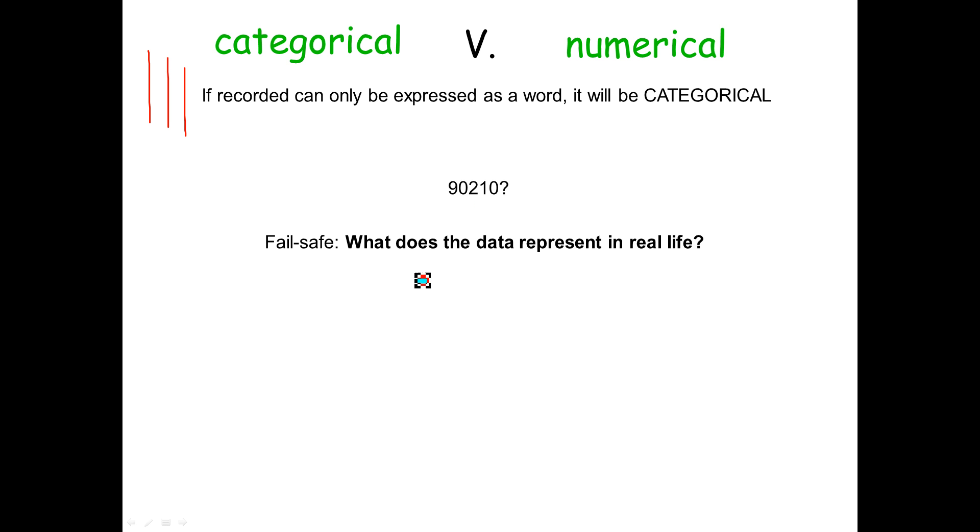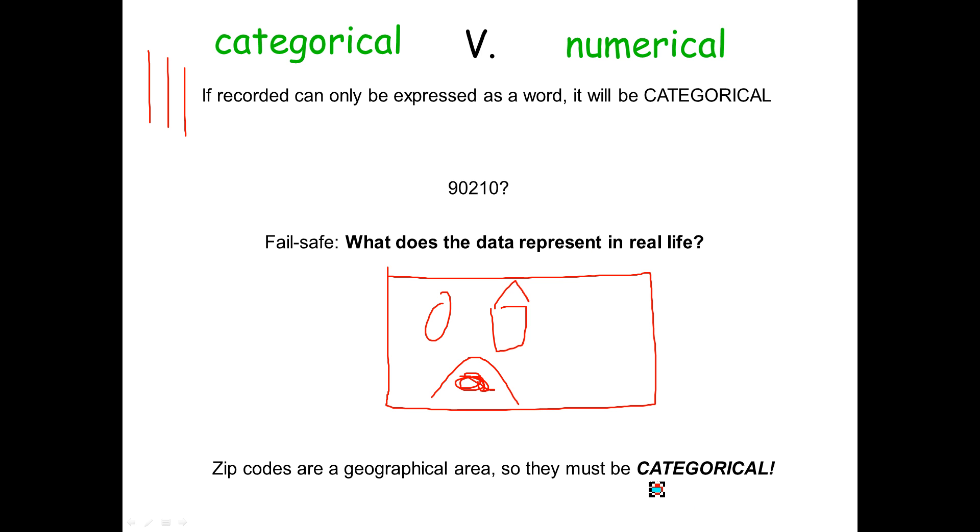In this case, a zip code actually represents a large geographic area. There are homes, there are swimming pools, there's Bin Laden's hideout somewhere in Afghanistan. The point is, it represents a large area that's essentially a grouping. And because it's a grouping, it's a category, and so we have to say the data is categorical. Even though it's a number, because it represents a larger grouping of things, we say it's categorical.